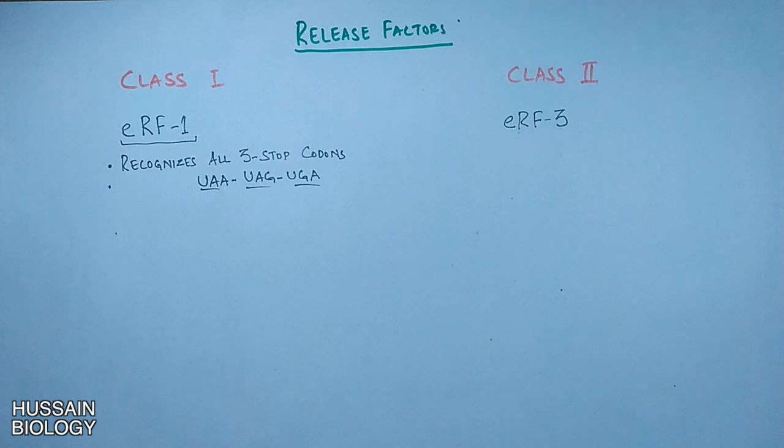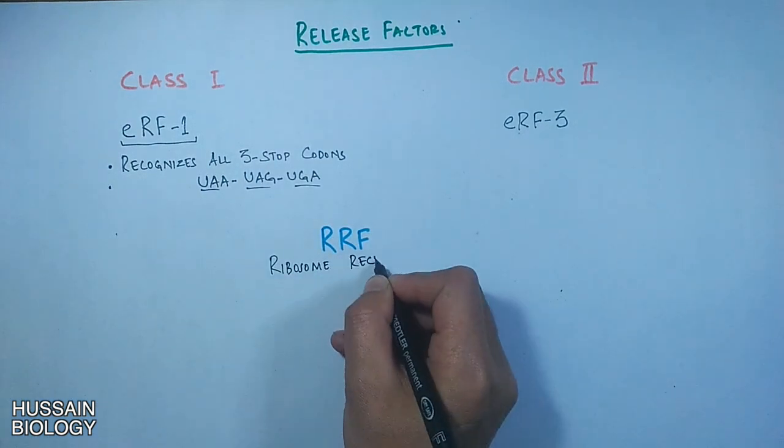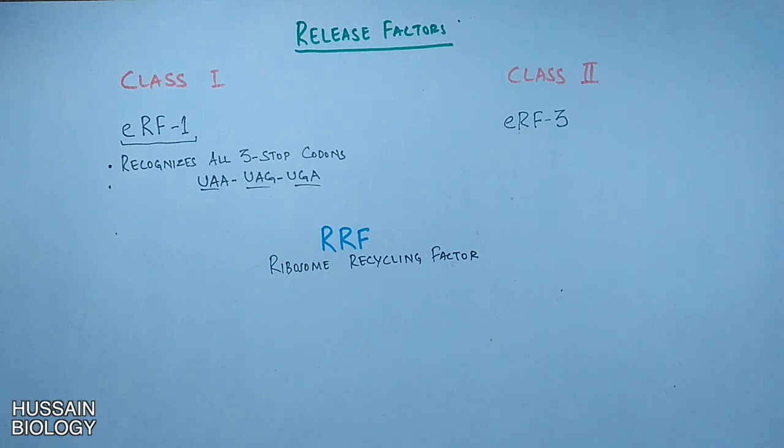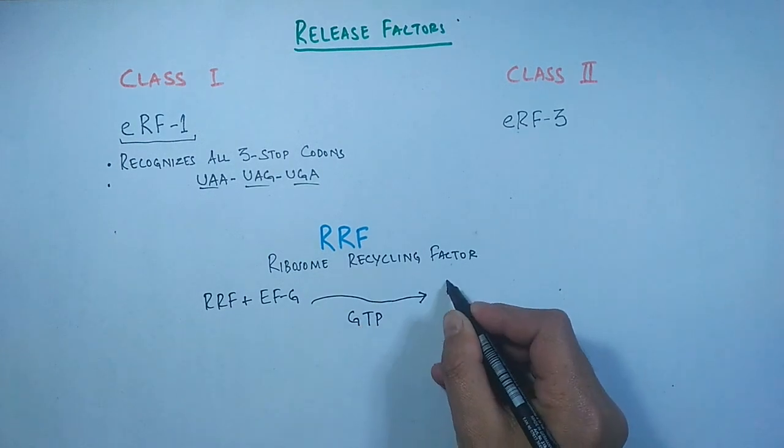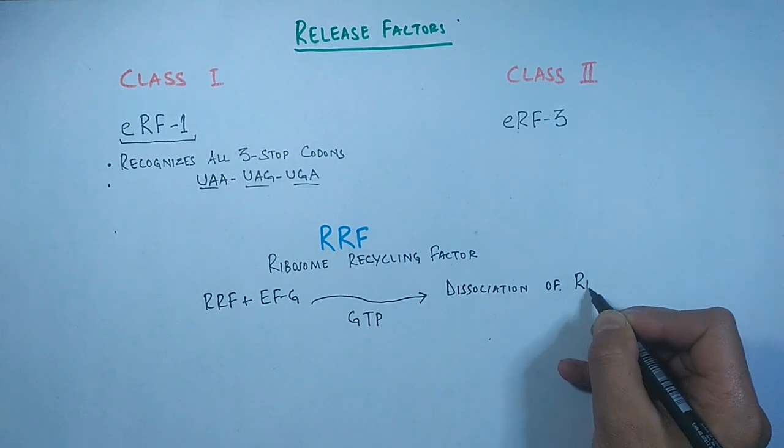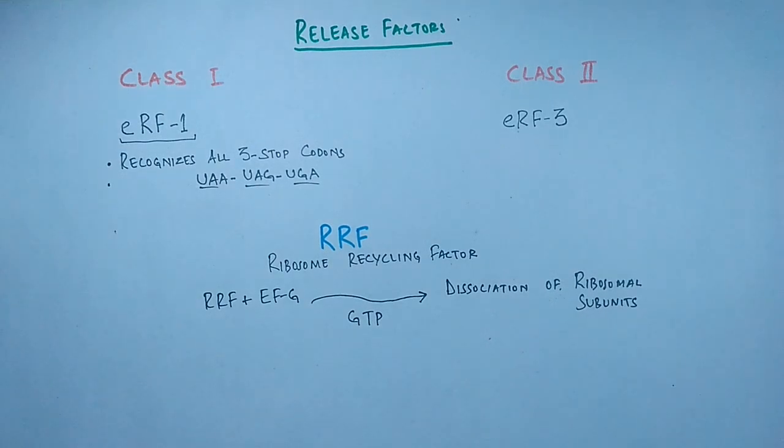And at last we have RRF which is ribosomal recycling factor. This RRF plus elongation factor G, which is in eukaryotes EEF2, when both these factors combine in presence of GTP, this mediates the dissociation of ribosomal subunits. So this concludes the factors in eukaryotes.